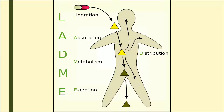As you can see, after administration the drug undergoes various processes: absorption, distribution, metabolism, and excretion. Absorption is the entry of the drug into the body; distribution is the spread of drug to various tissues and organs; metabolism is the conversion of the drug molecule under the influence of various enzymes; and excretion is the removal of the drug from the human body.